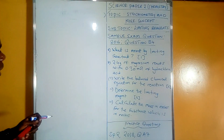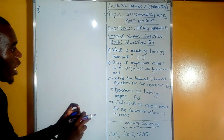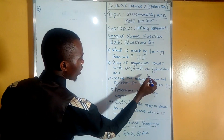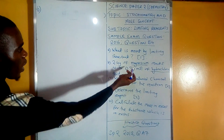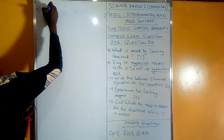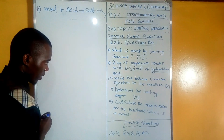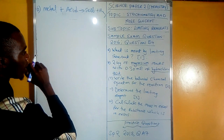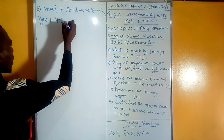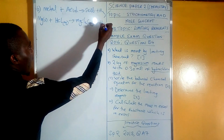Question b reads: 2.4 grams of magnesium reacts with 0.3 moles of hydrochloric acid — write the balanced chemical equation for the reaction. We have magnesium and hydrochloric acid reacting. Magnesium is a metal and hydrochloric acid is an acid. The general rule is that every time a metal reacts with a dilute acid, we get a salt and hydrogen gas. In this case, magnesium (solid) reacts with hydrochloric acid (aqueous) to produce magnesium chloride (aqueous) and hydrogen gas.